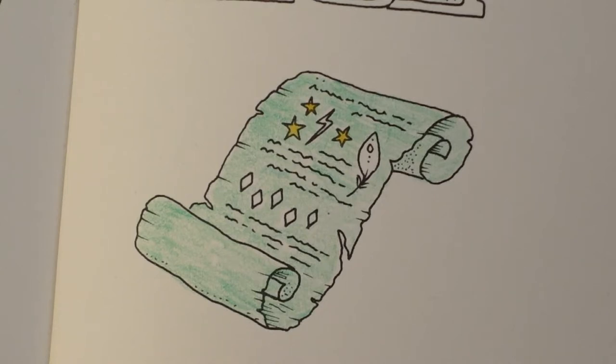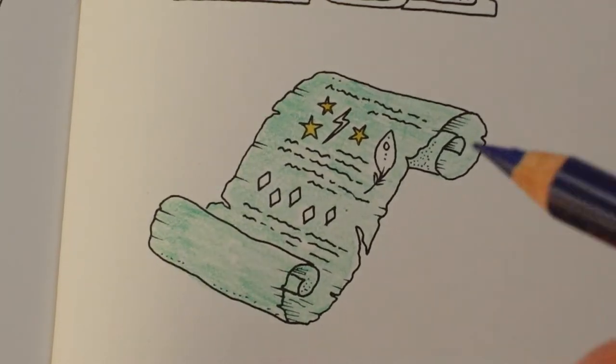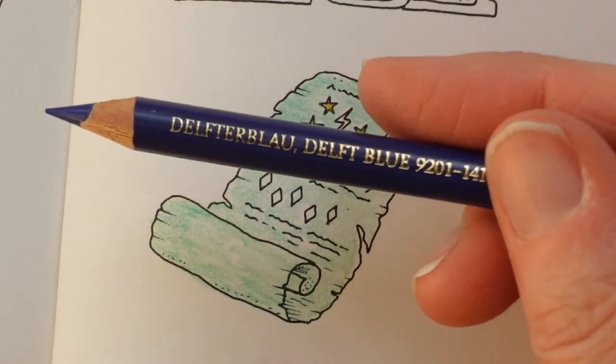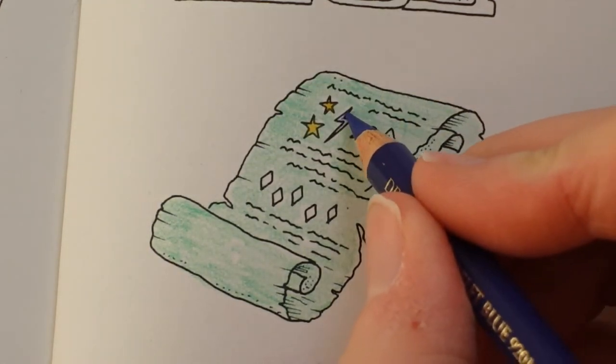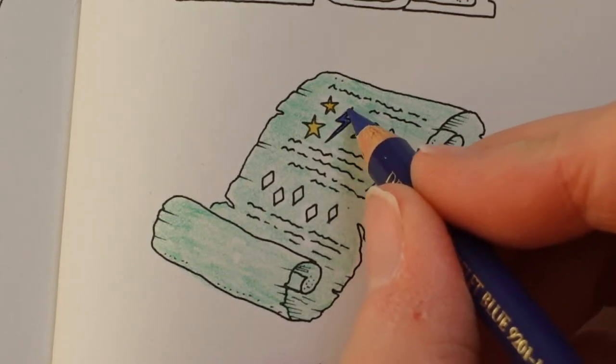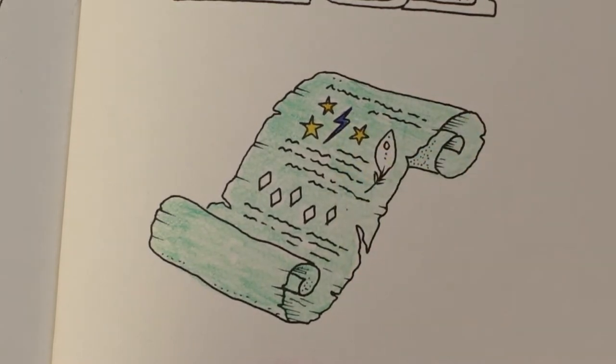So I'm thinking, let's go with a bluey green or something. Not a bluey green, a bluey purple. So I'm going to grab the delft blue and do it in that color. So it just looks a bit more magical and stands out. So yeah, so this is my delft blue. I love this color. There we go, it really does stand out.